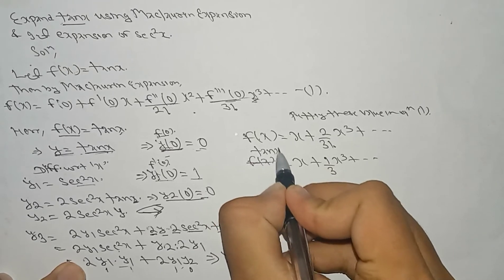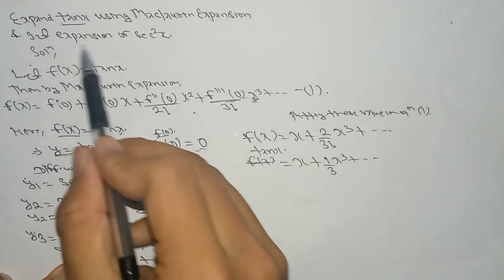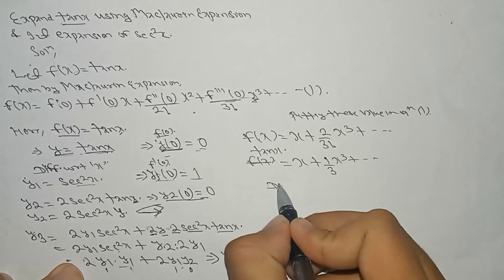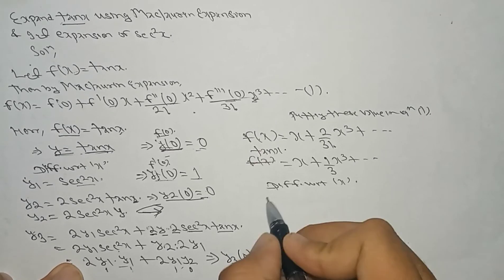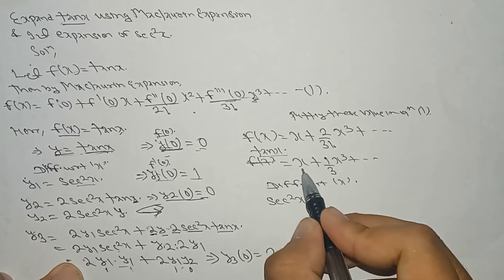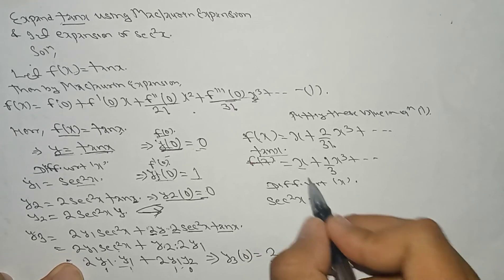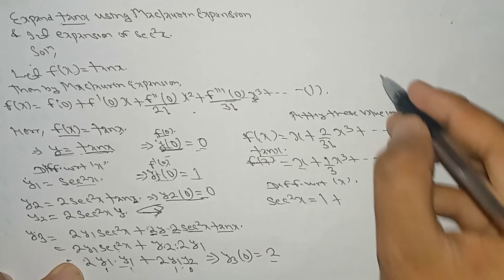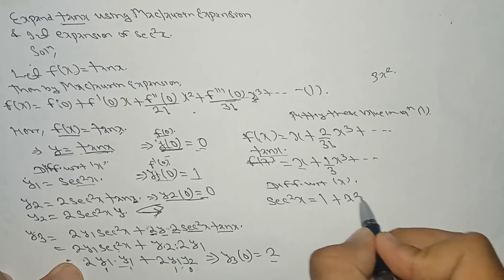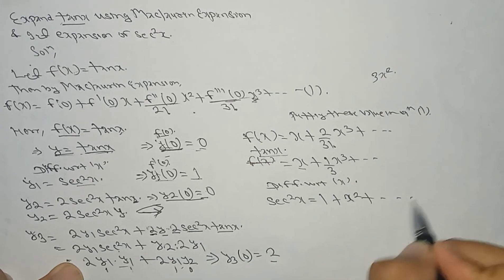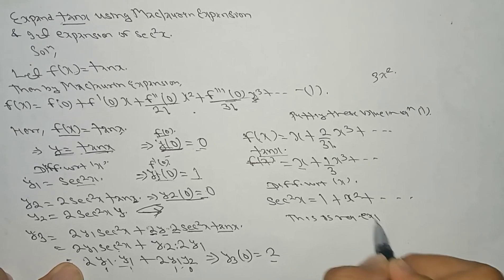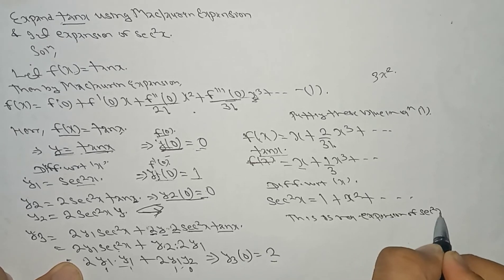We can also get the expansion of sec²x by differentiating. Differentiating tan(x) = x + (1/3)x³ with respect to x gives sec²x = 1 + x². So the required expansion of sec²x is: sec²x = 1 + x².